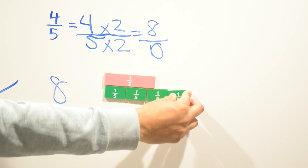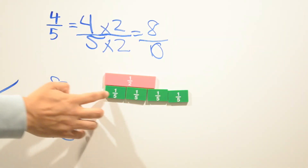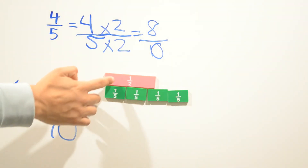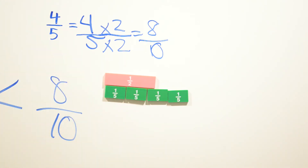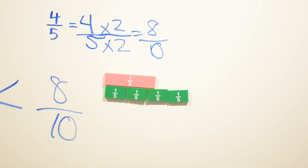As you can see, four fifths is greater than one half, so one half is less than four fifths. You can use the least common multiple and least common denominator method, or you can use tiles — either way you'll get the same answer.